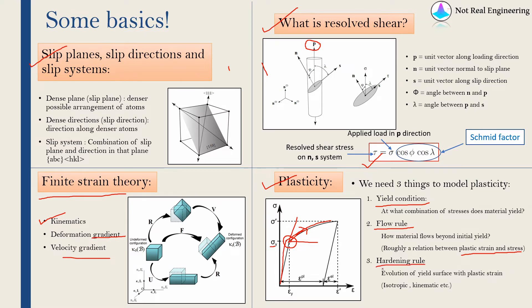And finally, the hardening rule tells us how the yield surface is evolving with respect to plastic strain. When a material undergoes plastic deformation and you unload and reload it, yield will occur at a different stress value. So hardening rule tells us how the yield surface is changing — examples include isotropic hardening and kinematic hardening. In this video we are going to see a phenomenological model that gives us exactly these three things in terms of crystal plasticity.